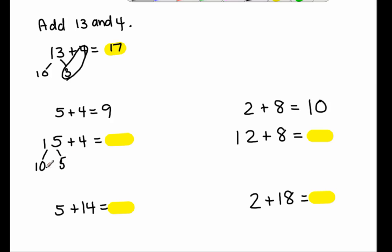Now I'm going to add up my ones, five and four. Five and four I know make nine, and 10 and nine make 19. So 15 plus four equals 19.